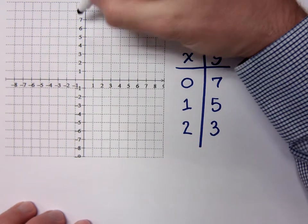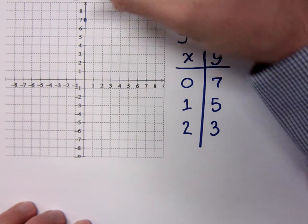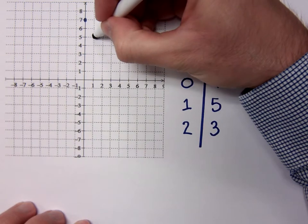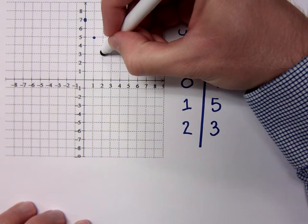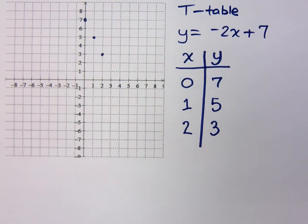So let's plot these. We have 0, 7. Have 1, 5. And I have 2, 3. Does it look like these guys are going to form a line for us? Yes.